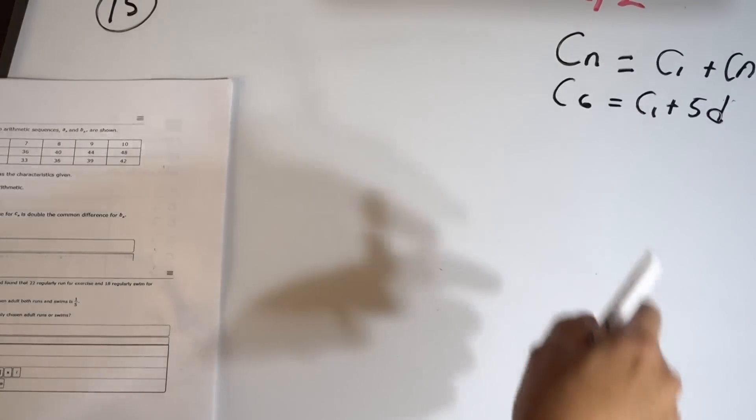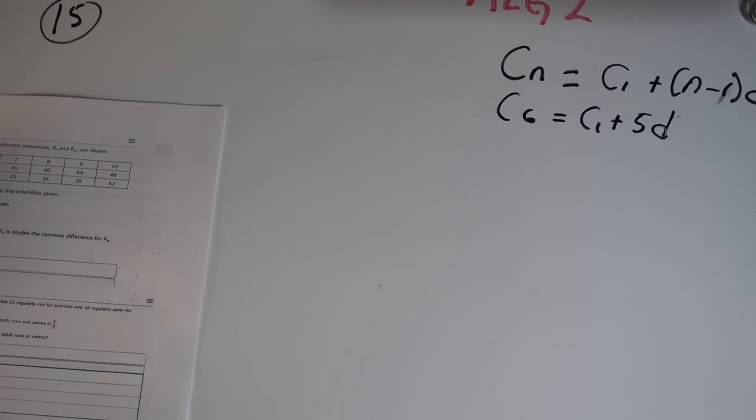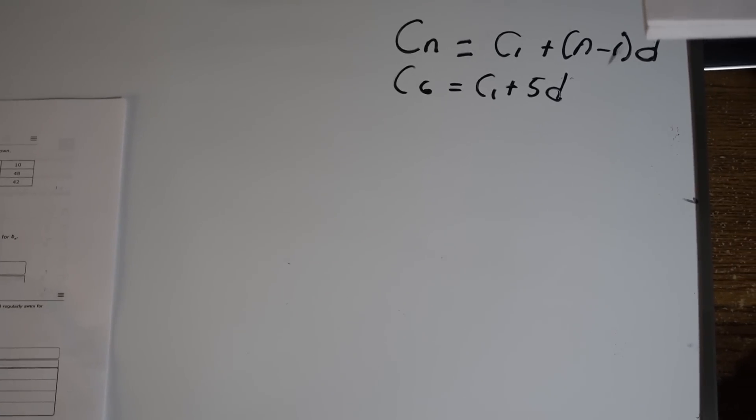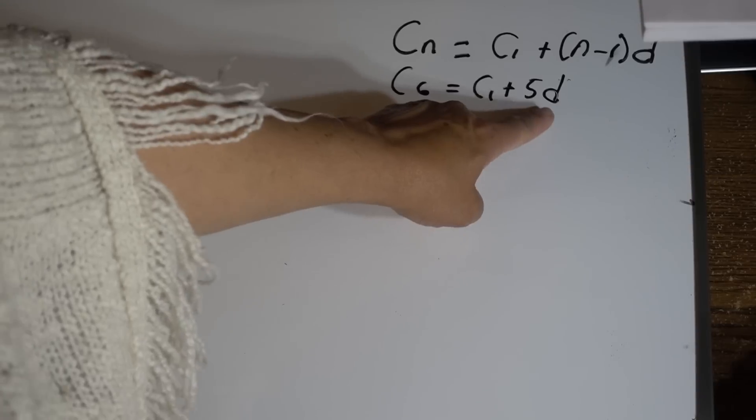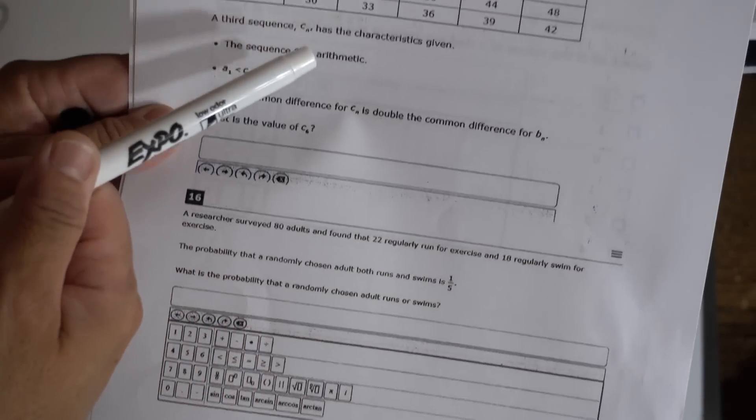Once I know how much c_1 is and how much the difference d for c_n is, once we know this value and this one we can find c_6.